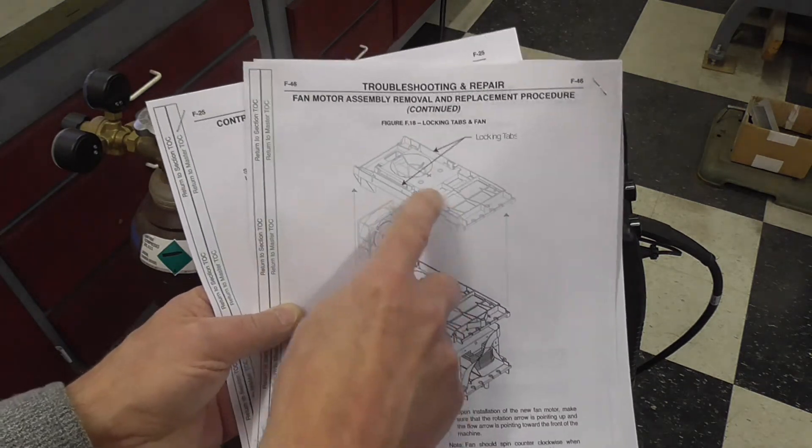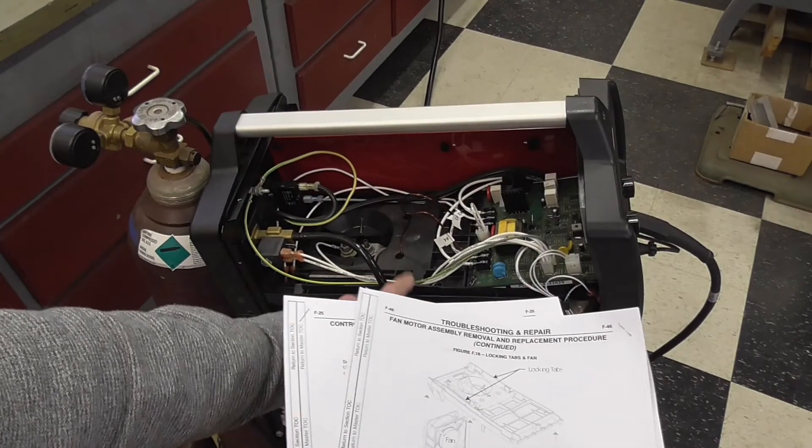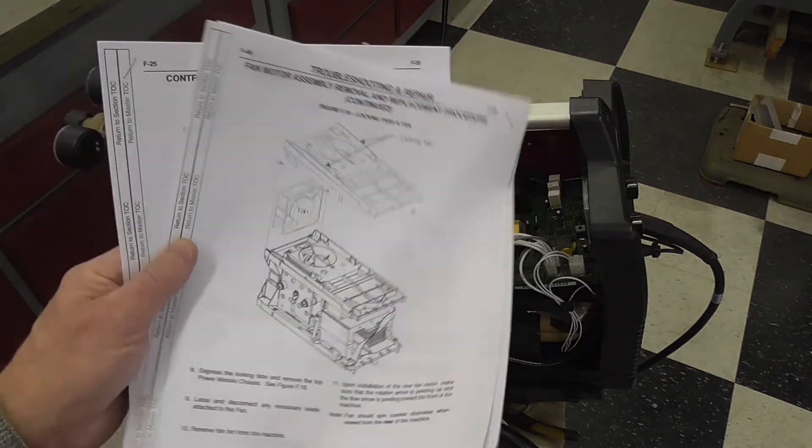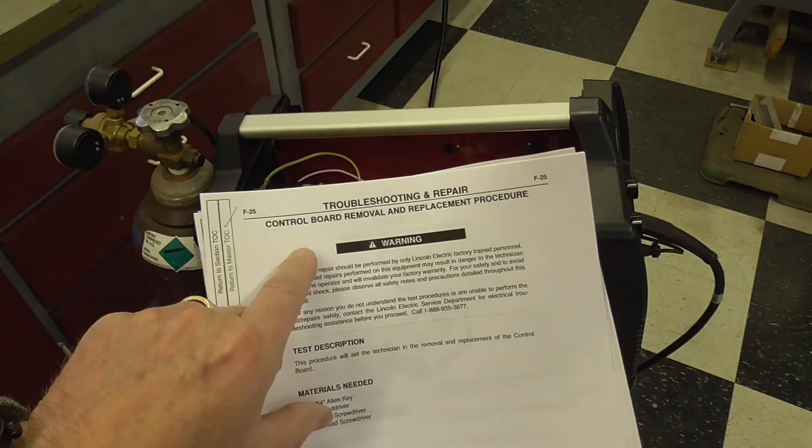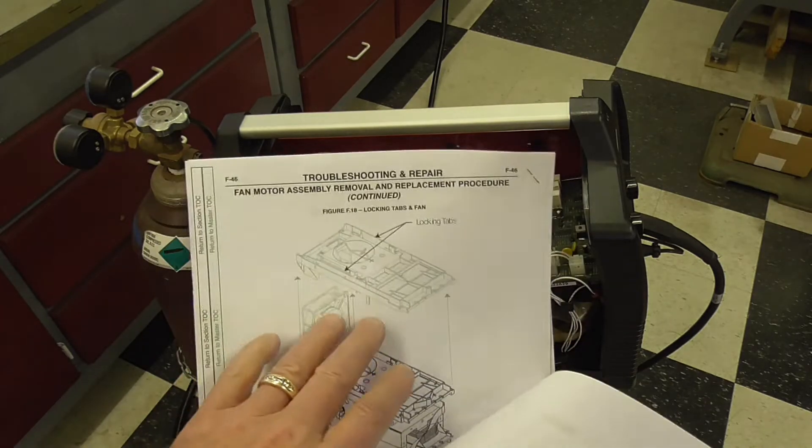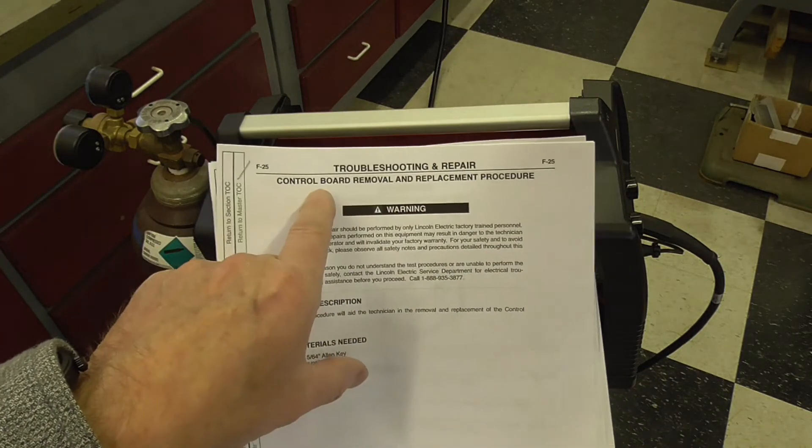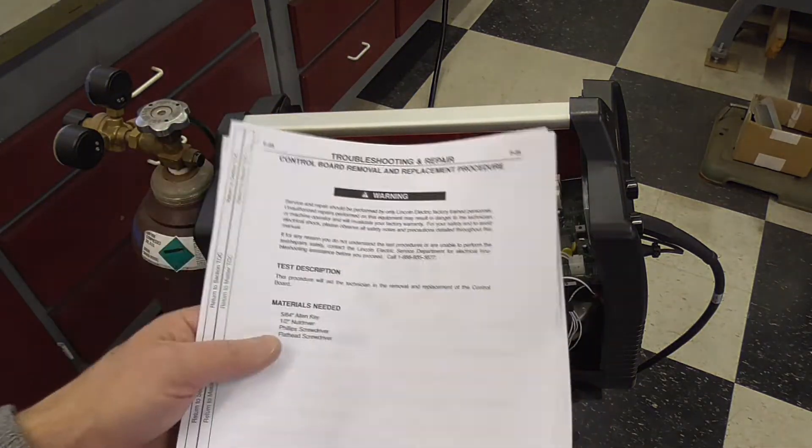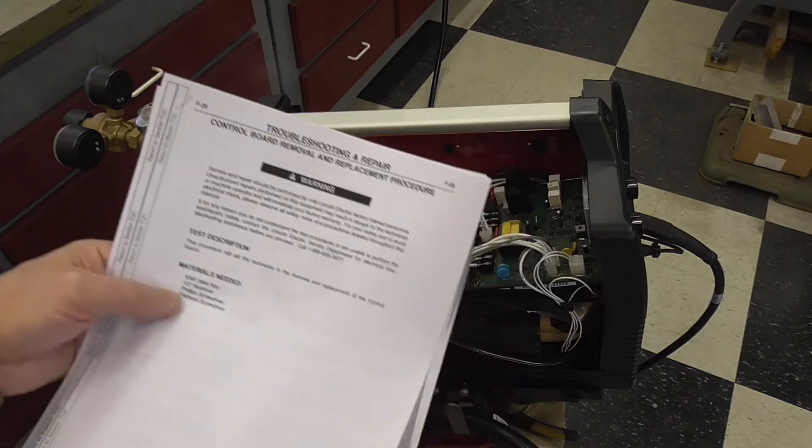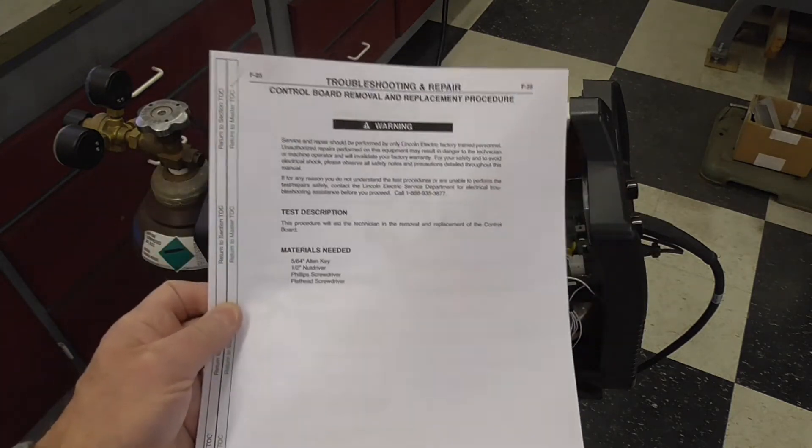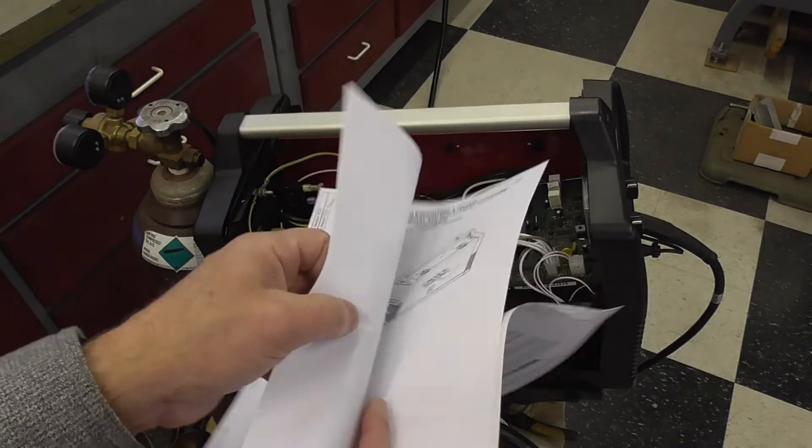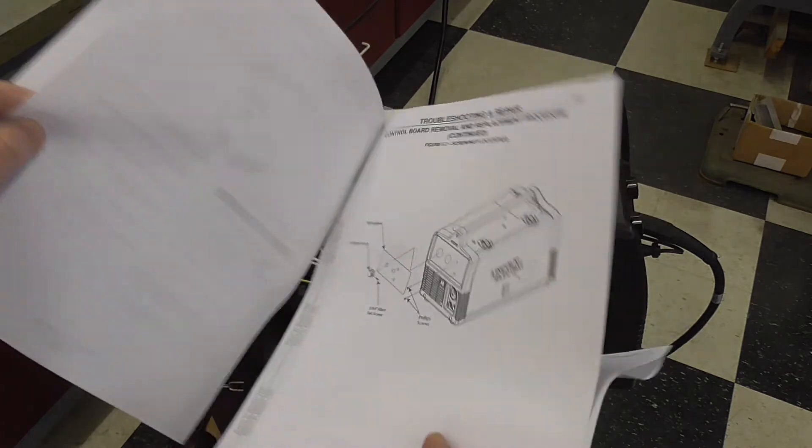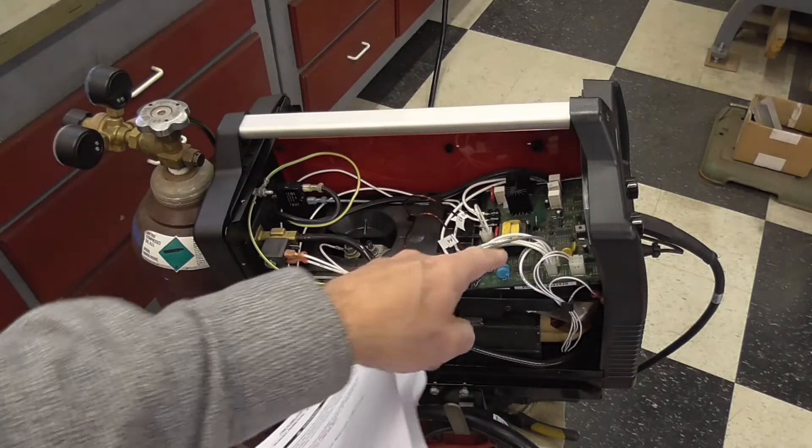And you can see this is that tray right here that they allude to and then the fan comes out. There's also a separate set of instructions right here that this first document references and that is the control board removal and replacement and that's the control board right there. So that has to come out first and they do provide a separate set of instructions. Fairly nicely detailed with tools required and the procedure you have to go through to remove that circuit board.